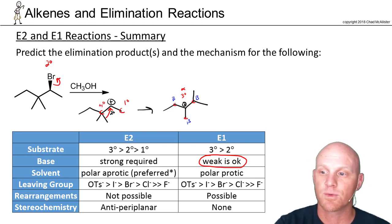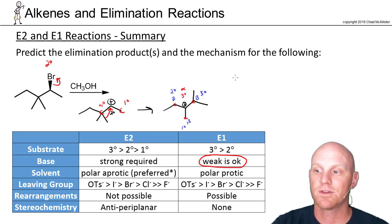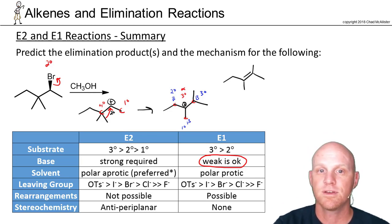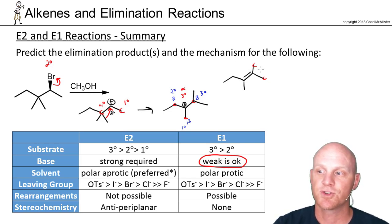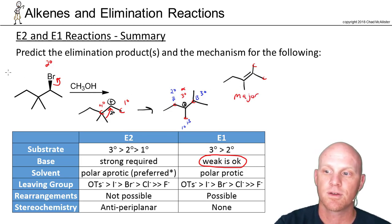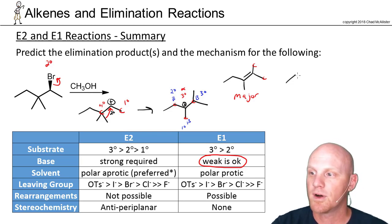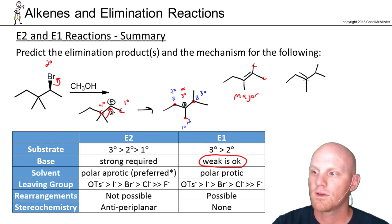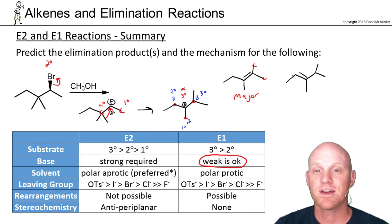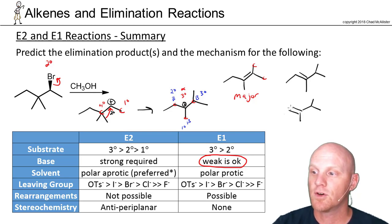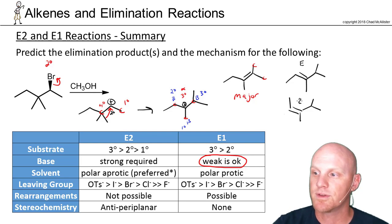We've got three different regioisomers we can form. Starting with Zaitsev: the tertiary beta carbon gives the most substituted alkene — that's the major product, and cis/trans don't apply because the sp2 carbon on one side is bonded to two identical methyl groups. Next, the secondary beta carbon gives a double bond where both sides of the alkene have two different substituents, so E and Z isomers are both possible — we get both, and they are both minor products.